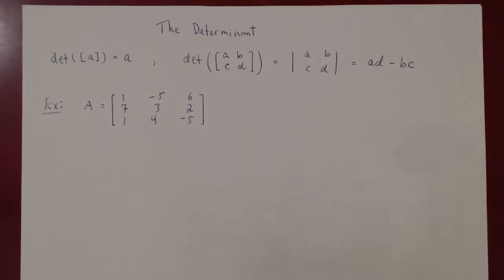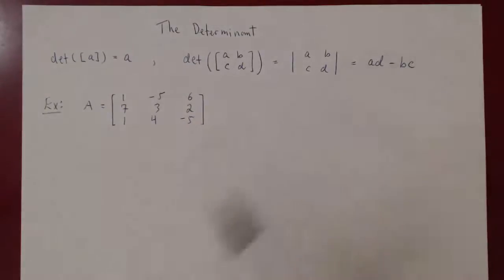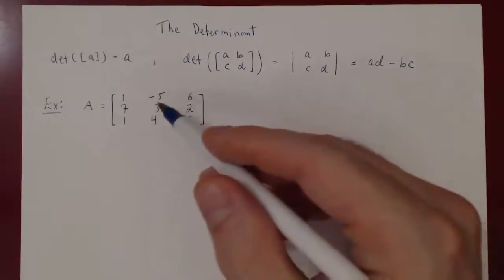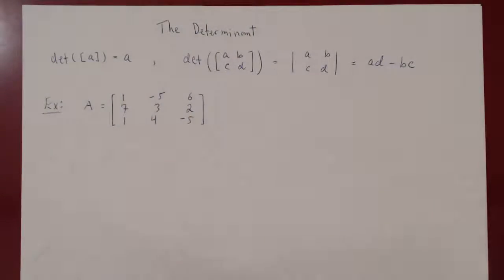Since we know the determinant of 1 by 1 and 2 by 2 matrices, how can we move on to figuring out determinants of 3 by 3 matrices, 4 by 4, and so on? Here's an example of a 3 by 3 matrix, and we'll ask: what is its determinant?